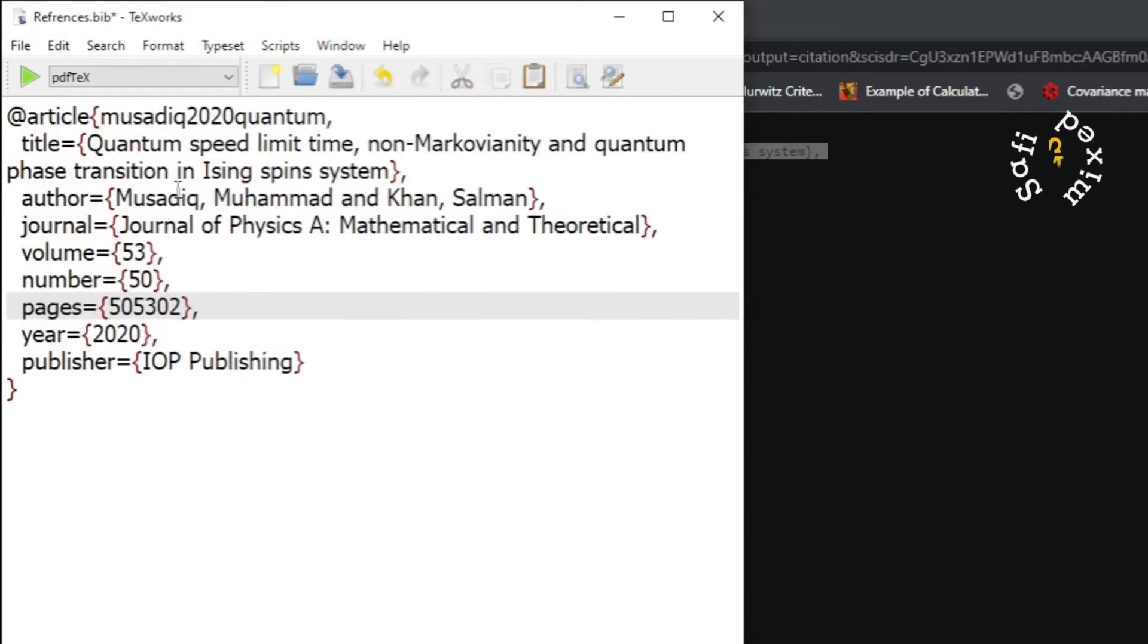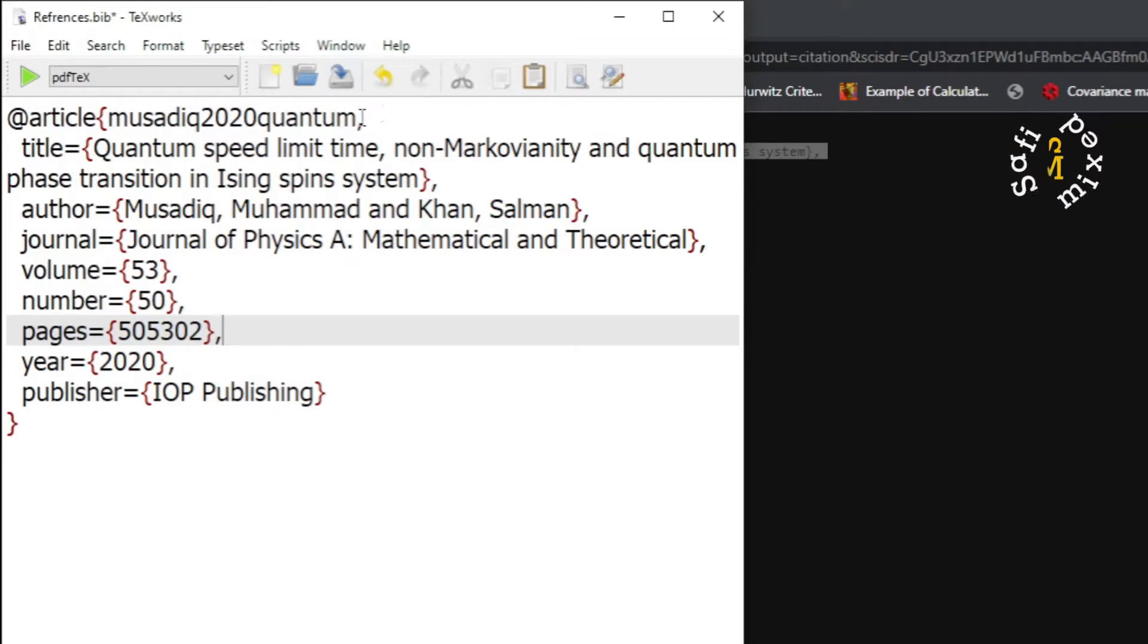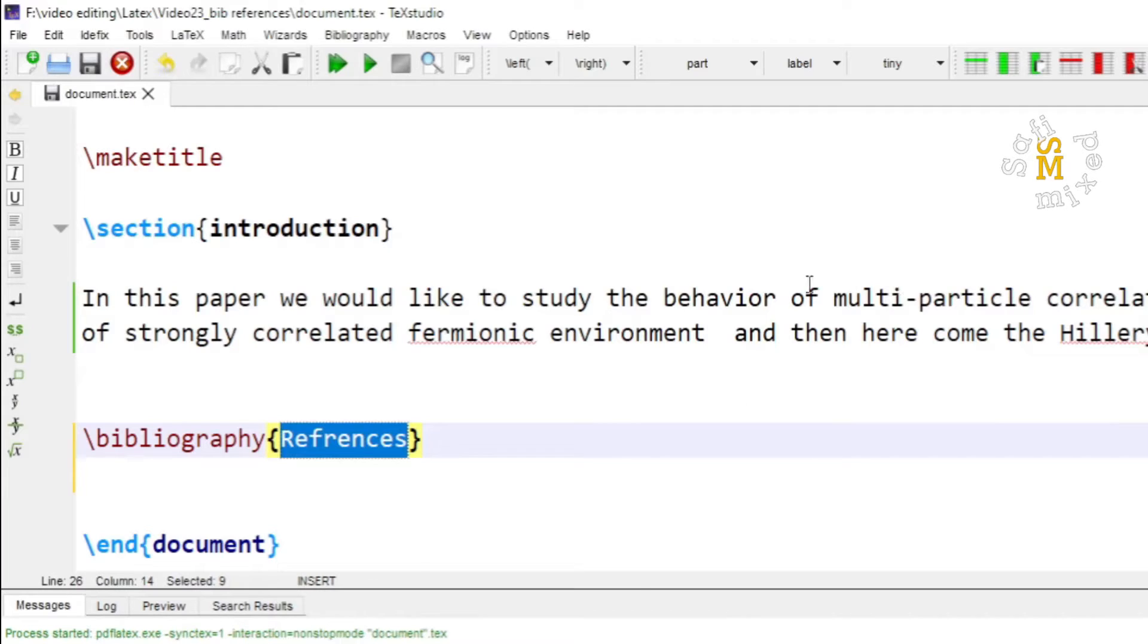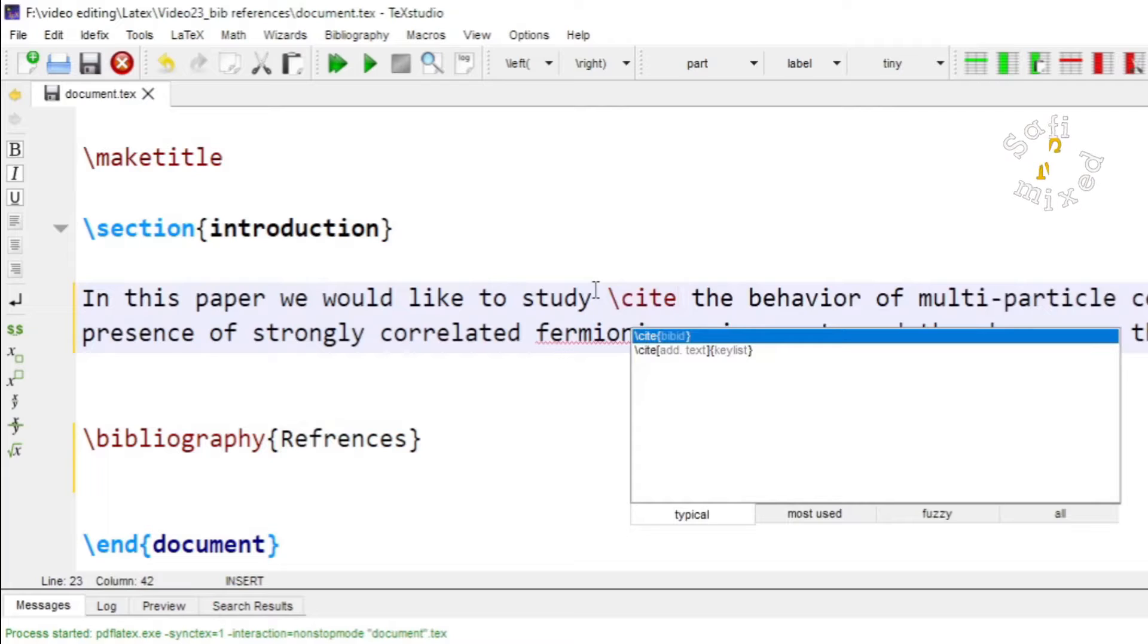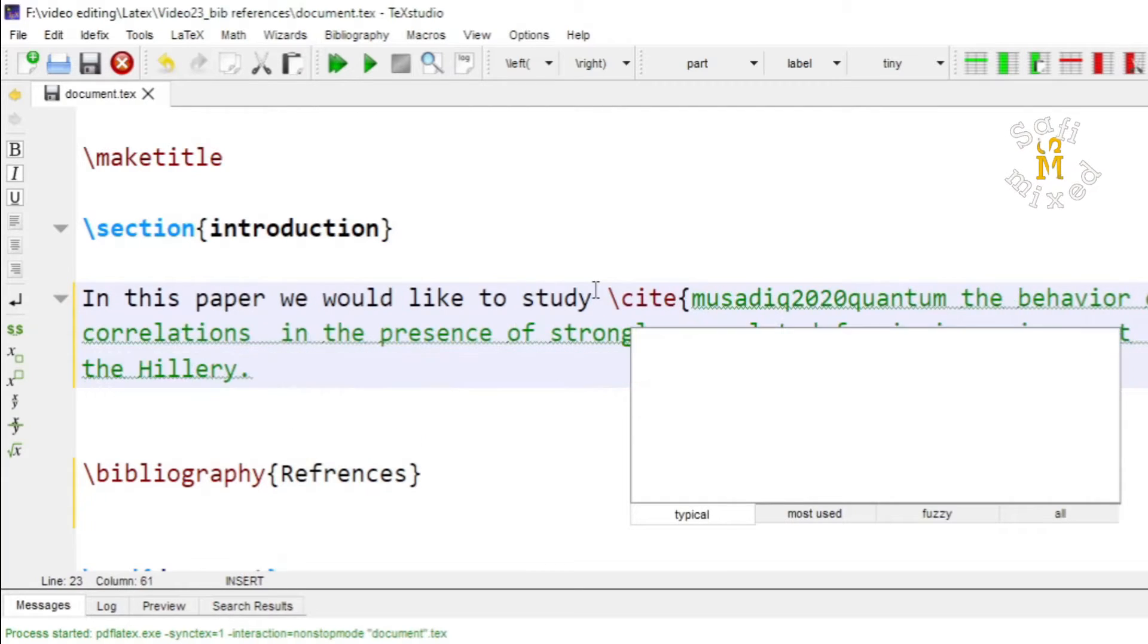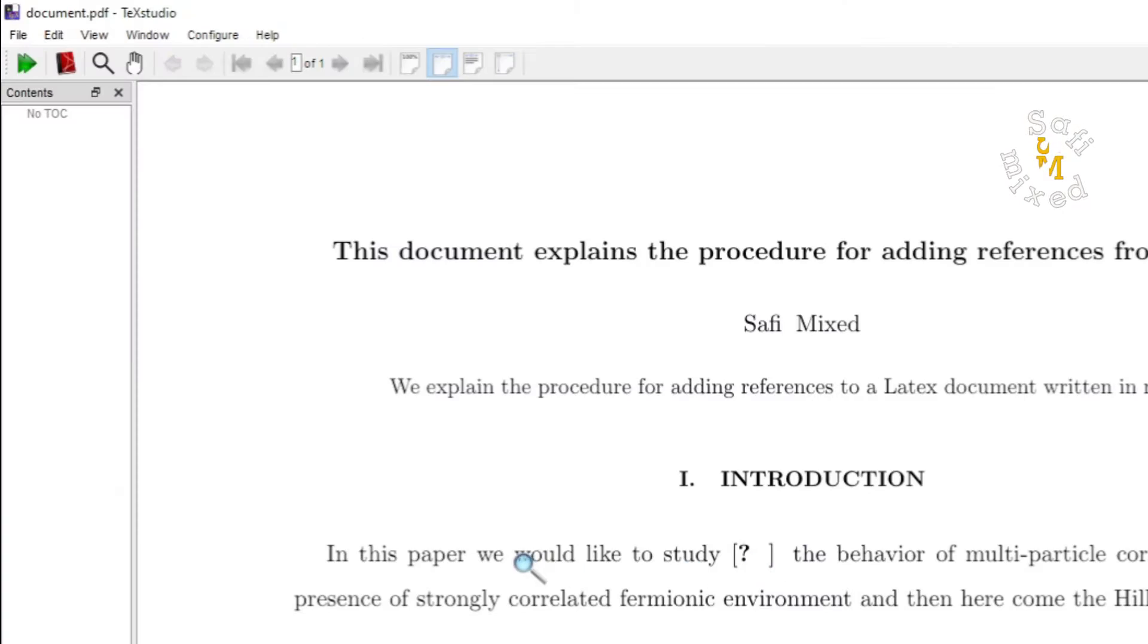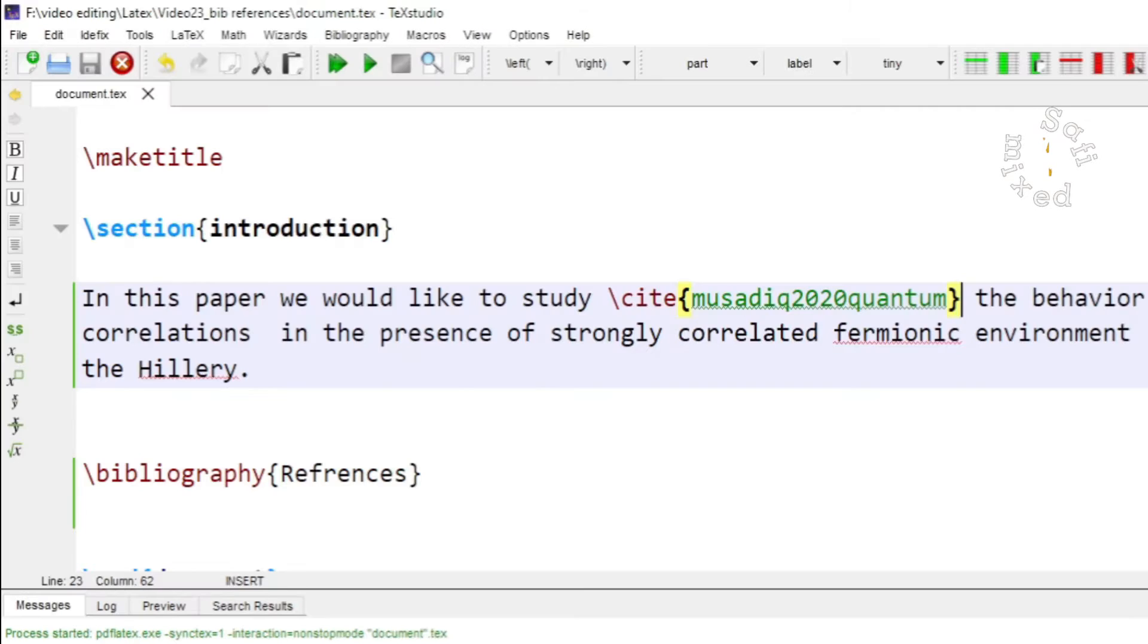If I enlarge the text then this is the citation key of this reference and I copy this reference to the file and I want to paste this somewhere over here inside the text using the cite command. If I build the document now you see the LaTeX hasn't read the reference from the file there is a problem.